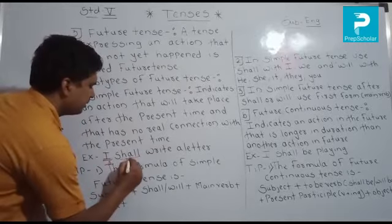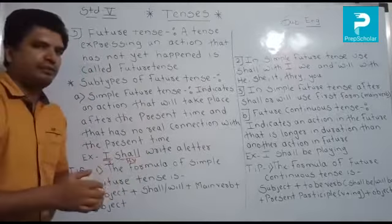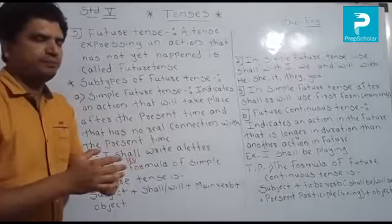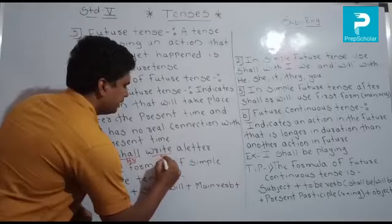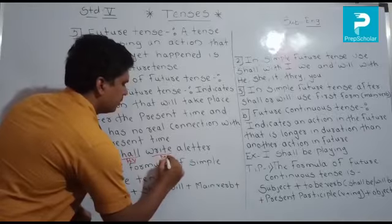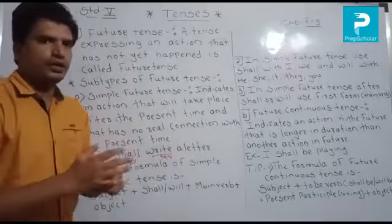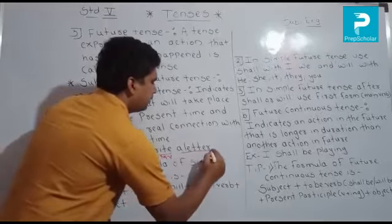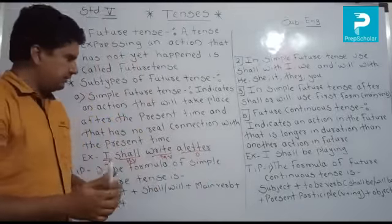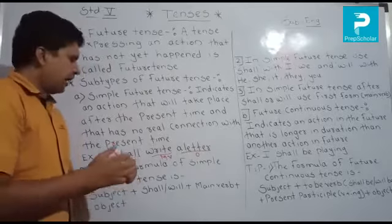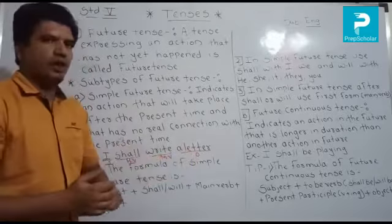Shall is the helping verb. Write is the main verb. And 'a letter' is the object. So I shall write a letter — I is subject, shall is helping verb, write is main verb, and a letter is object. It is an example of simple future tense.